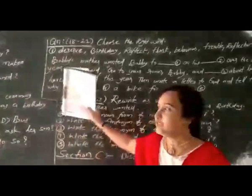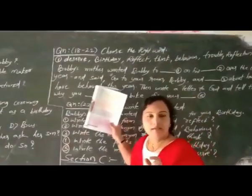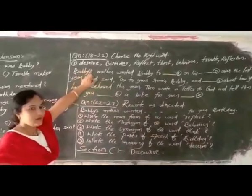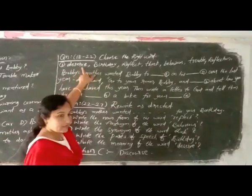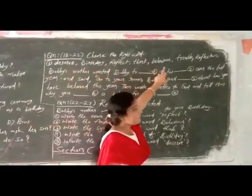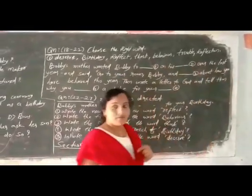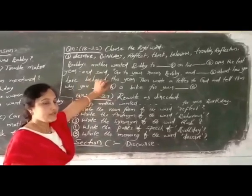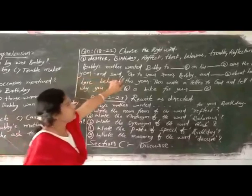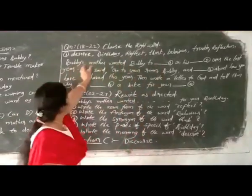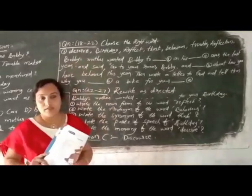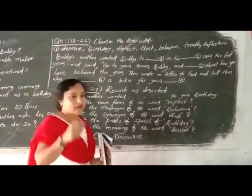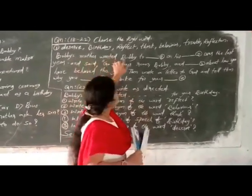In question number 18 to 22, 'Choose the right word.' Some words have been given: desire, birthday, reflect, think, behavior, trouble, reflection. You need to think and write which is the suitable one to fill in the blanks. See here: 'Bobby's mother wanted Bobby to blank' — which word is suitable? If you have gone through the lesson you will get the idea automatically.